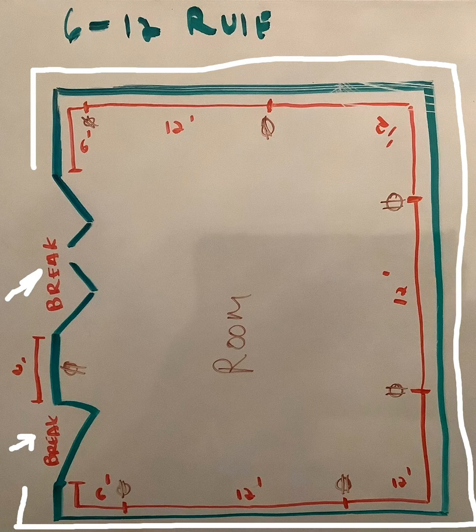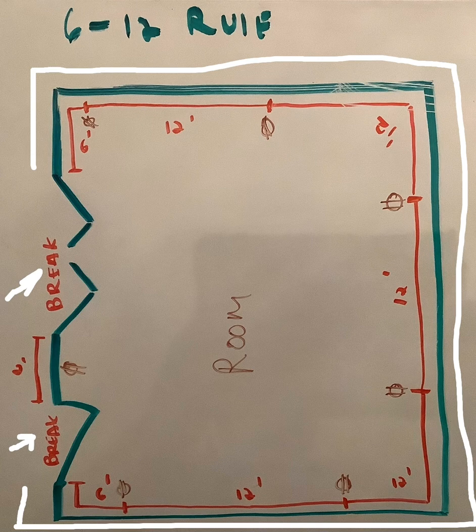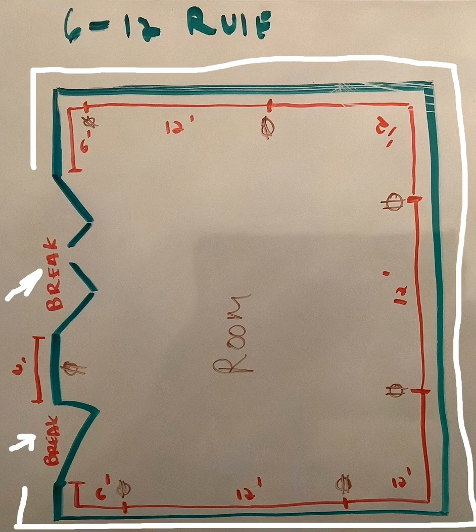The code says, receptacles shall be installed such that no point measured horizontally along the floor line of any wall is more than six foot from an outlet. What does that mean?